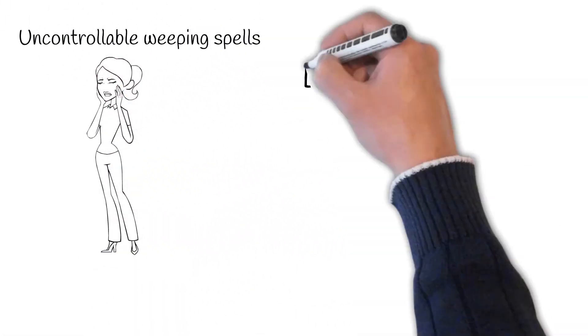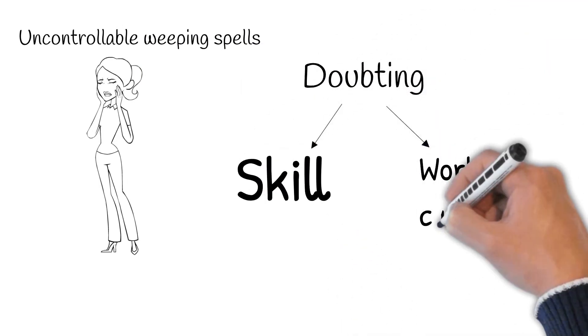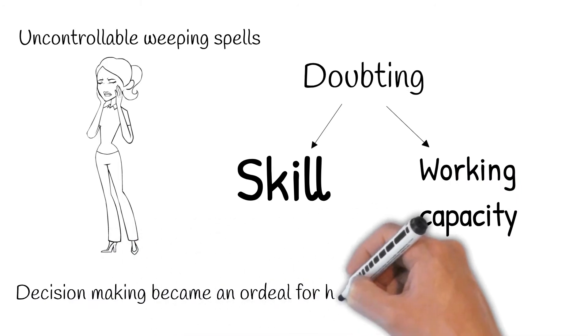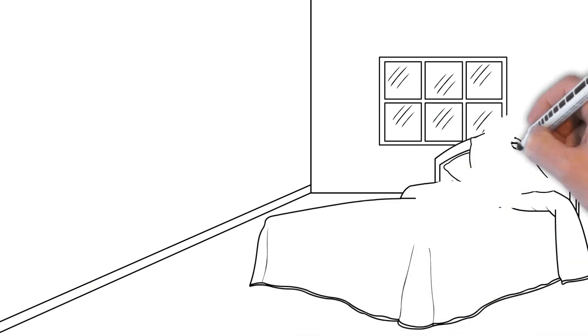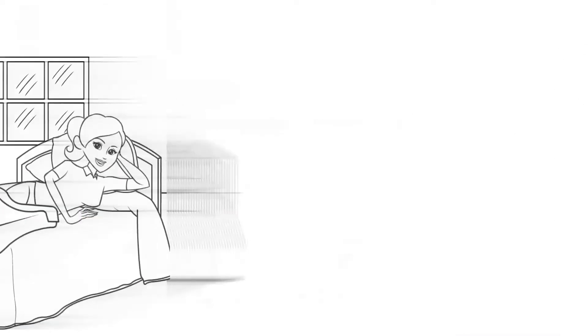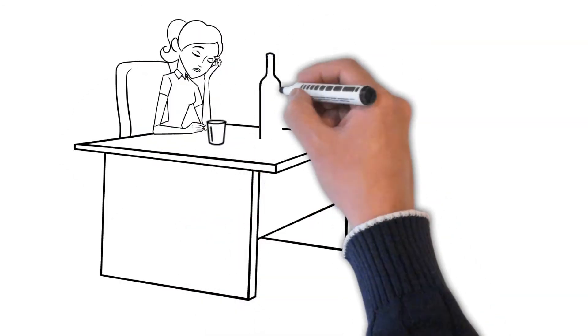Following her initial shock and rage, she began to have uncontrollable weeping spells and doubts about her skills and working capacity. Decision making became an ordeal. Her energy rapidly faded and she began to spend more time in bed, refusing to deal with anyone. Her alcohol consumption increased to the point where she was scarcely entirely sober.